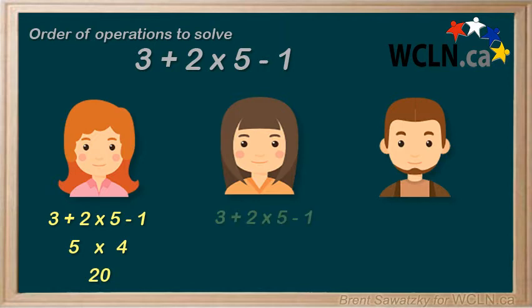So let's see what Tony is thinking. She decides to do the multiplication first. So, 2 times 5 equals 10. So on her next line, she'd have 3 plus 10 minus 1, and she'd be getting 3 plus 10 equals 13 minus 1 is 12. Hmm. She has something different than Kerry.